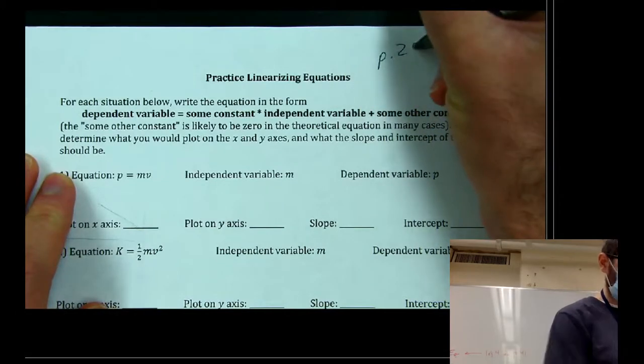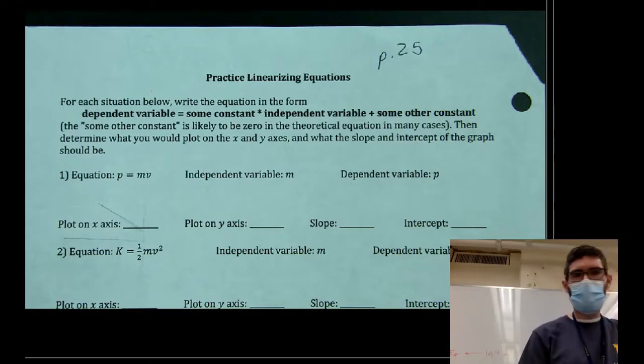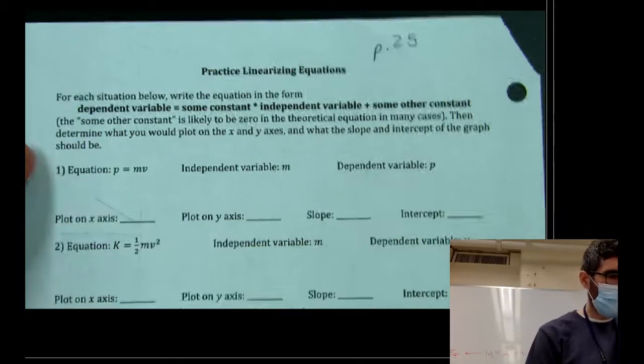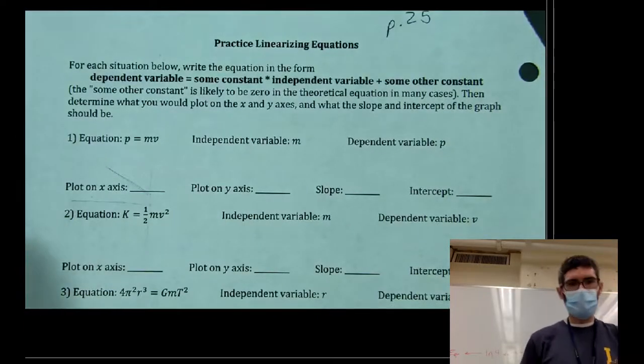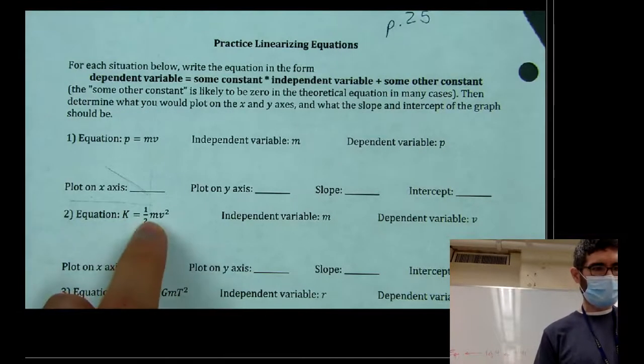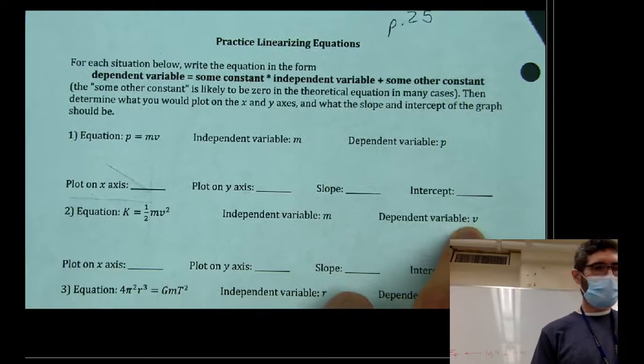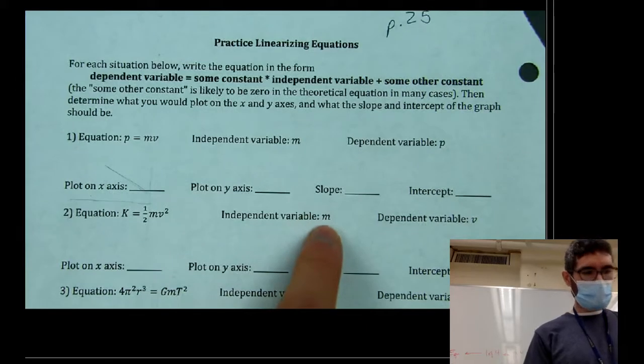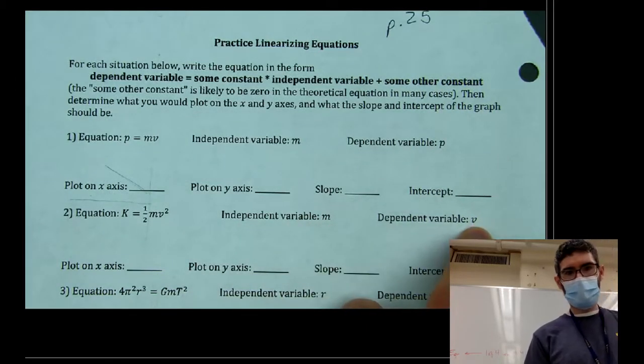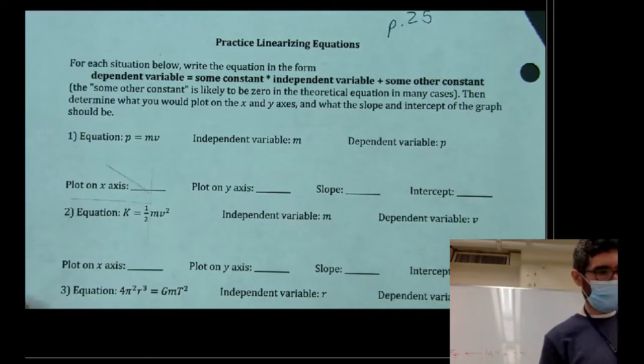All right. We just flipped it over. We're on page 25 of your quarter one lab packet. I want to try a couple more examples of linearizing equations just to show you a couple of ways you can do it. For instance, if you look at number two, there are actually at least two ways I can think of that would be acceptable for linearizing this. If your independent variable is M and your dependent variable is V. So that means in an experiment, you would change the mass and look for an effect on what would in this case be your speed. Obviously, we haven't used this equation yet, but it's one we'll use later this year. We can still make a good example out of it.